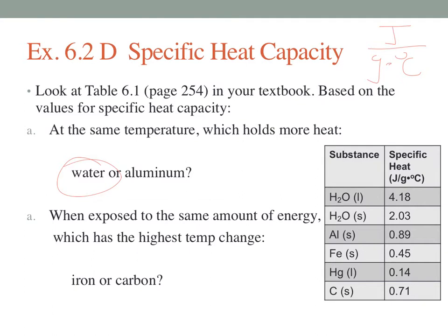When exposed to the same amount of energy, which has the highest temperature change? Iron or carbon? Iron is 0.45. Carbon is 0.71. So if we heat those up, if we put those both out in the sun, there's the energy, same amount of energy, iron has a lower specific heat, it will heat up faster.